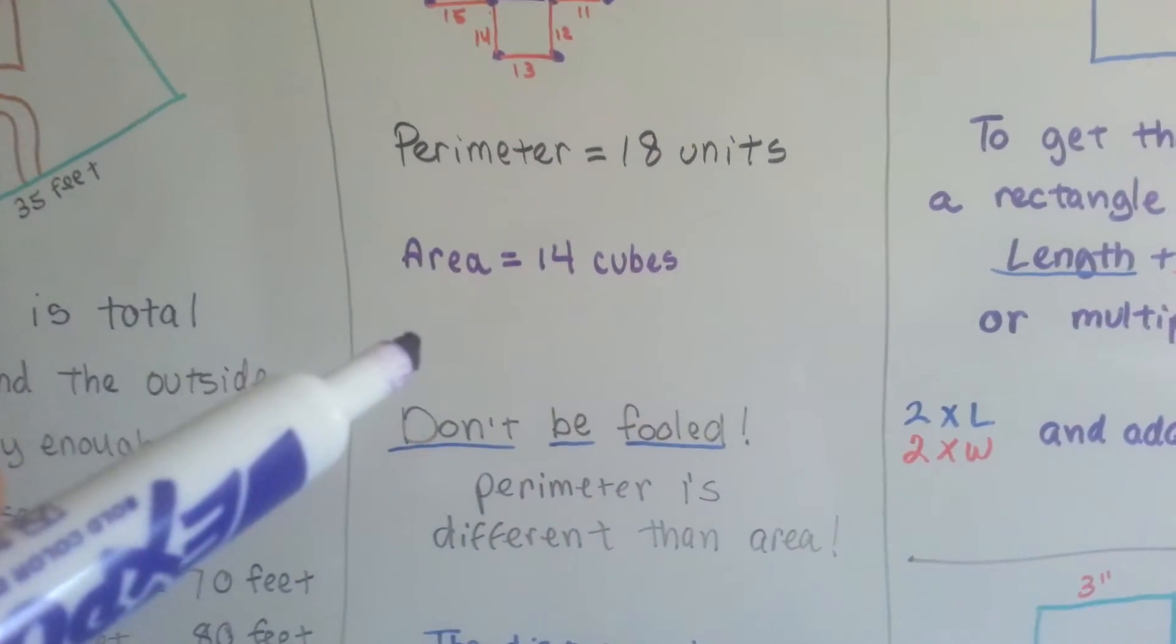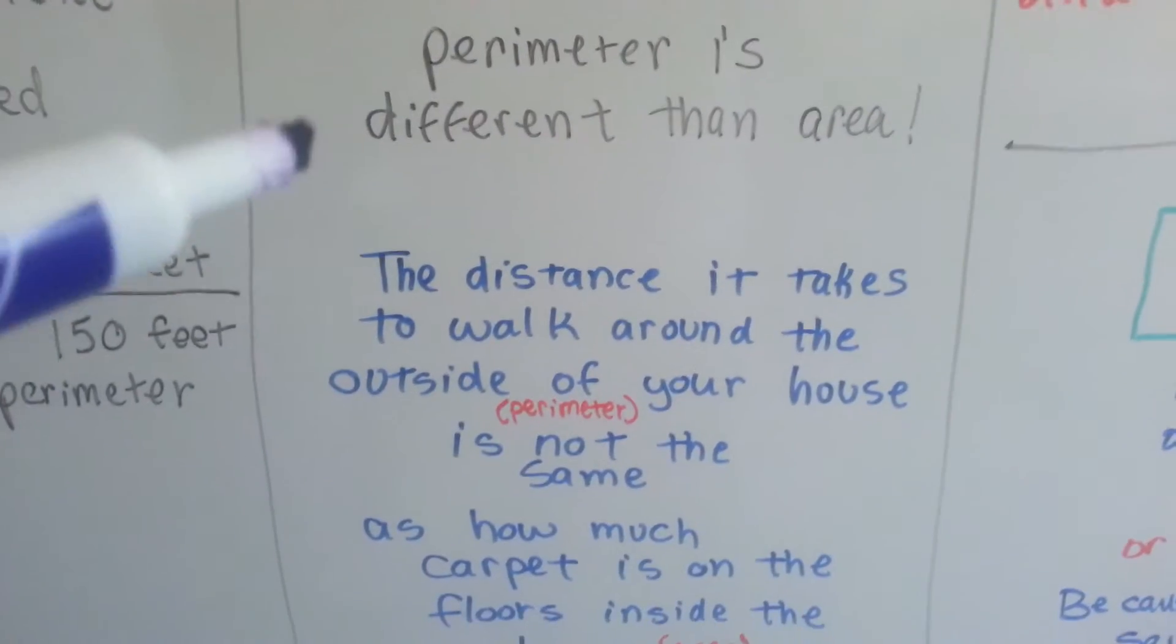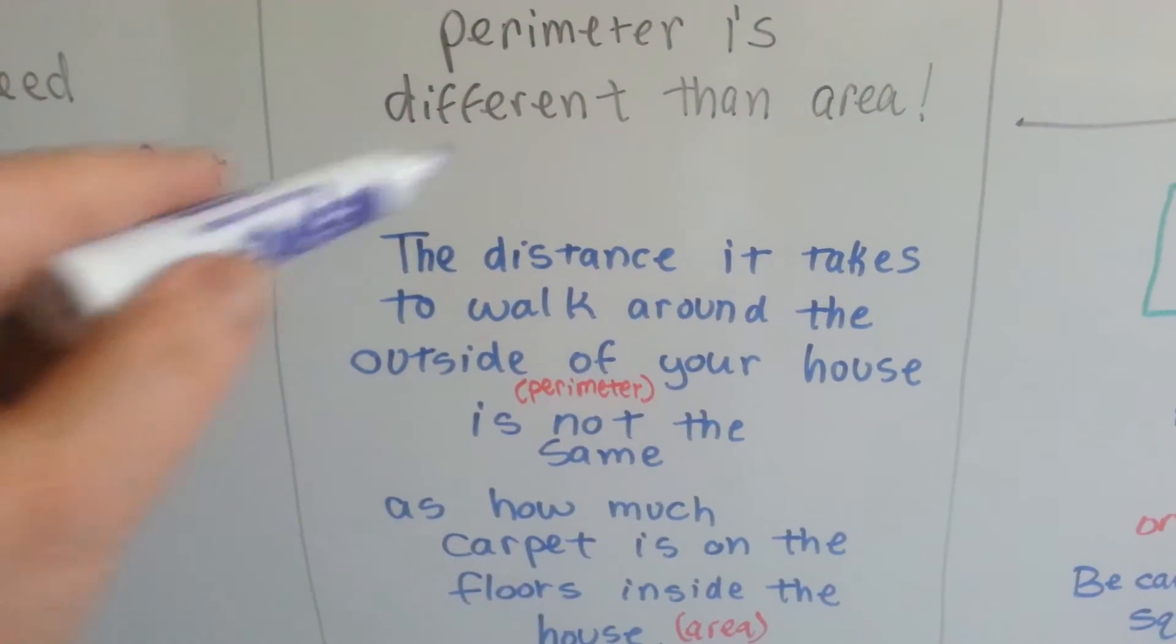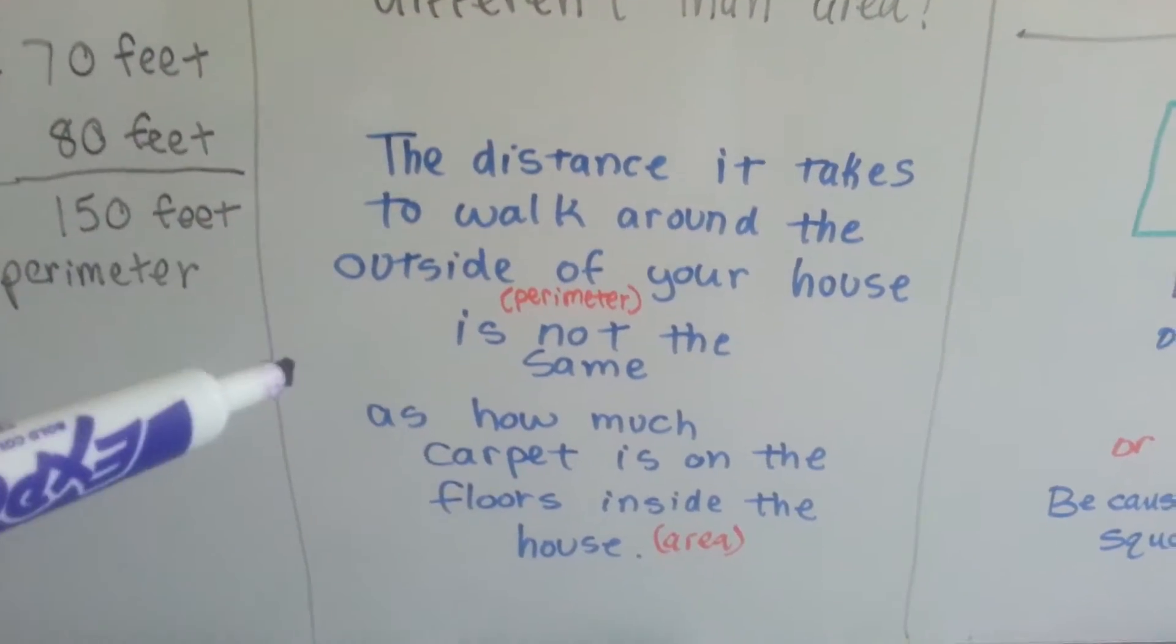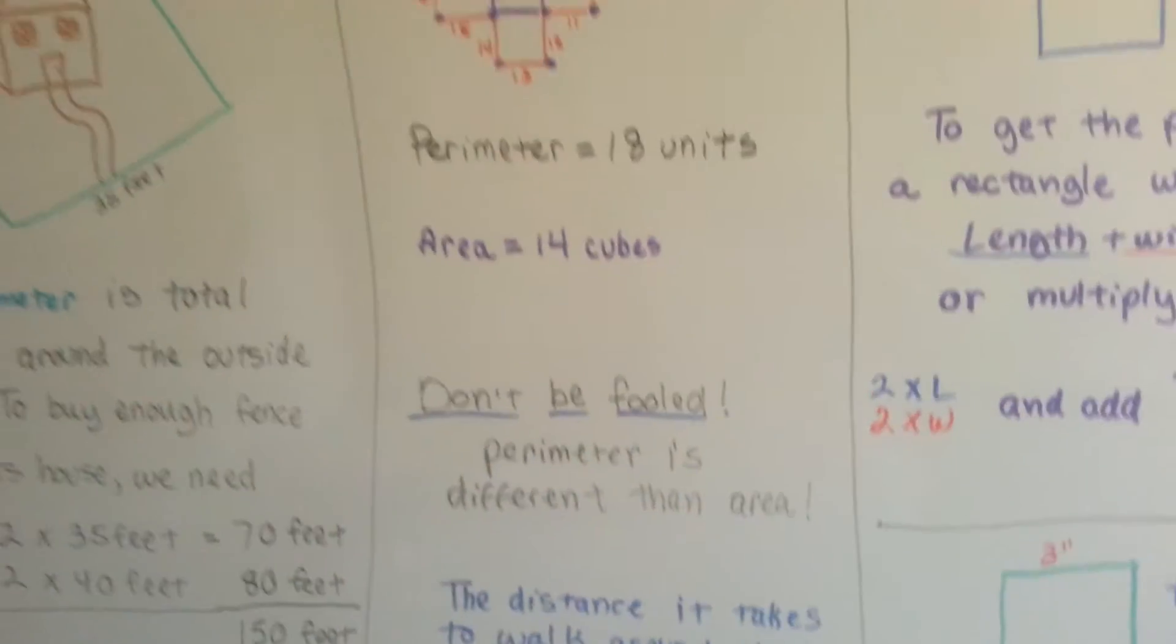So don't be fooled. Perimeter is different than area. The distance it takes to walk around the outside of your house is not the same as how much carpet is laying on the floor on the inside of the house. Two very different measurements.